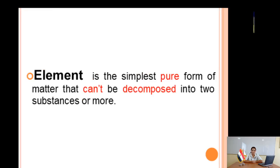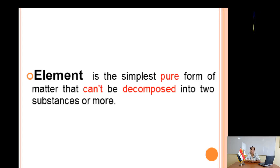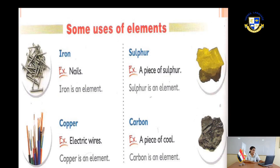What is meant by element? It is the simplest form of matter that cannot be decomposed or analyzed into two or more subsets. Examples include iron, sulfur, copper, and carbon.